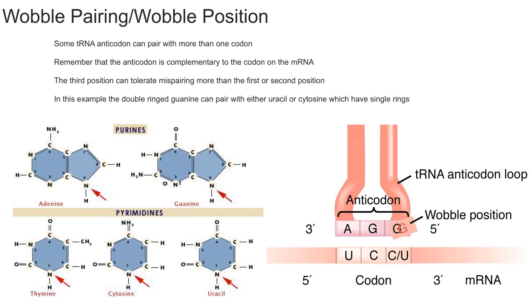As you can see in this example over here, we have the guanine in the wobble position in the third position and it could pair with either a cytosine or a uracil, that's why it has the C slash U.